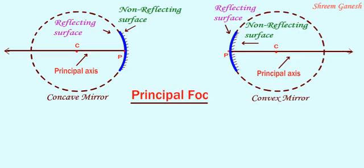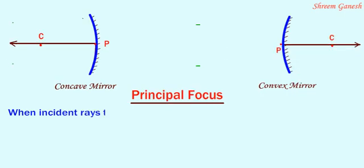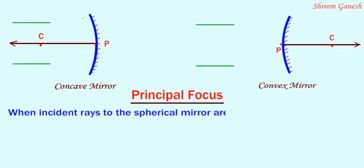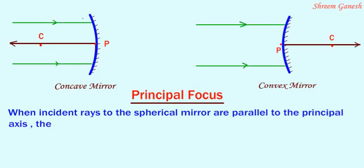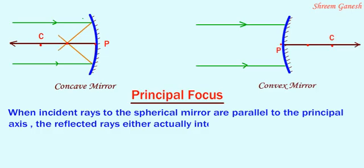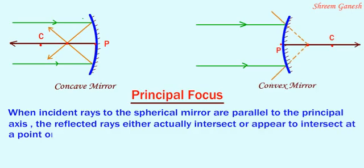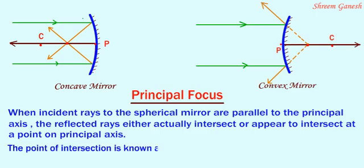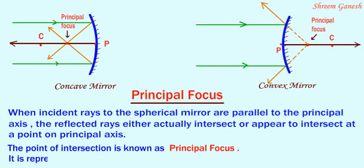Principal focus. When incident rays to the spherical mirror are parallel to the principal axis, the reflected rays either actually intersect or appear to intersect at a point on the principal axis. This point of intersection is known as the principal focus. It is represented by the letter F.